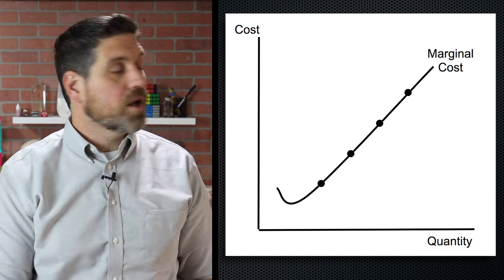But how many units should you make? If you stop producing right here, the additional revenue is greater than the additional cost — you can still get more profit if you produce more units. So you keep producing as long as the additional revenue is above the additional cost, and you stop right here. You never produce over here where the additional cost is greater than the additional revenue — that's producing too much. You want to produce back where MR equals MC. That's the profit-maximizing quantity, and you're using the profit-maximizing rule.